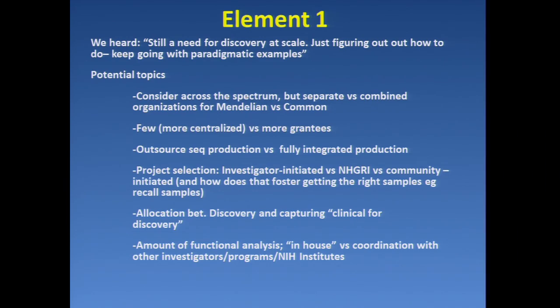Element one is the general architecture of disease topic. It has to encompass common and Mendelian and all the other things that were talked about. What we heard this morning — vastly oversimplifying from the breakout group report — was: there's still a need for discovery at scale, and we're just figuring out how to do this; keep going with paradigmatic examples.